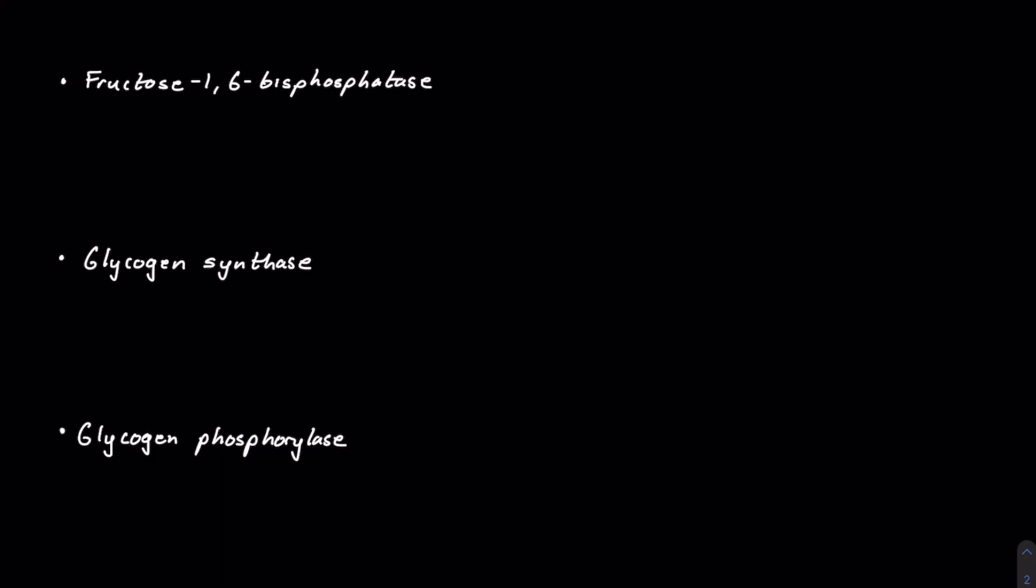Next, we'll take a look at fructose-1,6-bisphosphatase. You should recognize this one as the rate-limiting enzyme of gluconeogenesis, which in many ways is the opposite pathway of glycolysis. Fructose-1,6-bisphosphatase is one of the enzymes that we need to go upstream in glycolysis to bypass some of the irreversible steps,